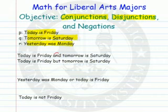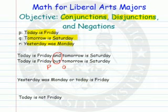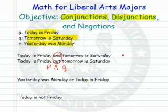In the first case, I have used 'and' and 'but.' Which statements did I use? Today is Friday — that's statement P. Tomorrow is Saturday — that's statement Q. My connector was the word 'and' or 'but.' The symbol for that is this upside-down V, and this is called a conjunction.